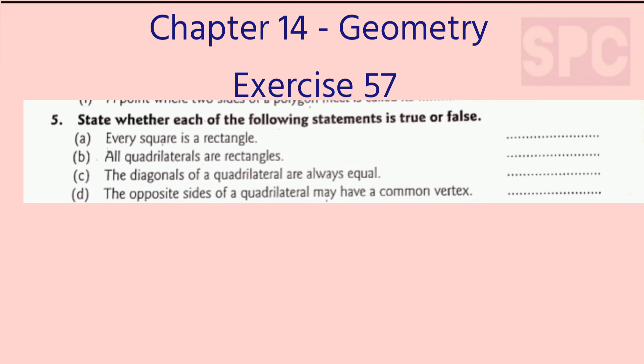Question 5: State whether each of the following statements is true or false. Part A: Every square is a rectangle — this is true. The property of a rectangle is that opposite sides are equal. In a square, opposite sides are also equal — in fact, all sides are equal. So every square is also a rectangle. This is true. Part B: All quadrilaterals are rectangles — this is false. All quadrilaterals are not rectangles.